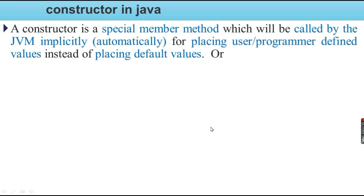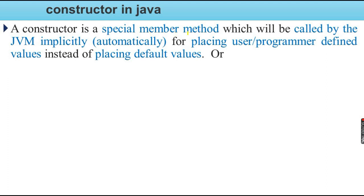What is a constructor in Java? A constructor is a special member method which will be called by the Java Virtual Machine implicitly or automatically for placing user or programmer-defined values instead of placing default values.